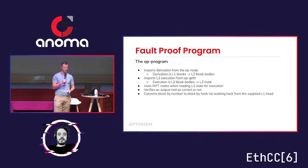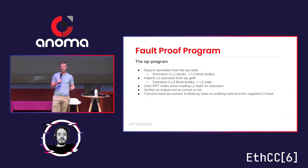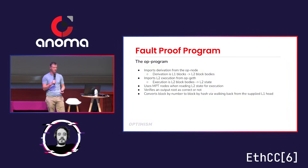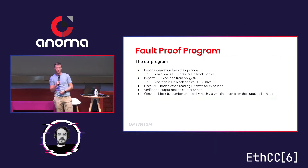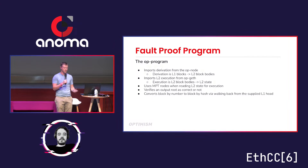The specific OP program takes the derivation package from the OP node — this is what goes from L1 blocks to L2 block bodies, so that's the list of transactions to be executed. Then we pull in the L2 execution from OP Geth, and that's those block bodies to the final L2 state. It's a wrapper around already existing code, so whenever we make a change in OP node or OP Geth, it automatically gets pulled in. We also go through Ethereum's pre-existing proof system.